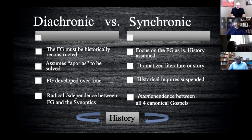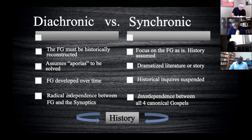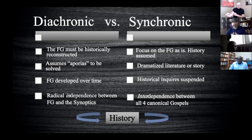Diachronic advocates are going into the text relying on standard critical methods assumed to provide windows through which to view the Gospel's historical development. Basically, diachronic advocates aren't just reading the Gospel of John to read what it says about Jesus. They're looking for these inconsistencies as windows to see what it says about the Gospel's development — how the Fourth Gospel became what we know it as today.